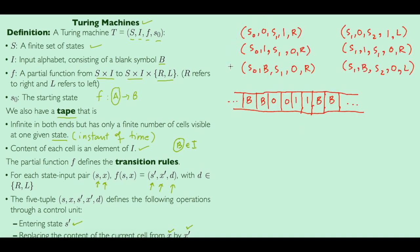Let's see some examples. We have a Turing machine defined by a set of six five-tuples, and this is the initial position of the visible tape. We start at the leftmost non-blank cell with starting state S0. Our current pair is (S0, 0), so we find S0 in the table: we move to the right, replace 0 with 1, and our next state is S1.